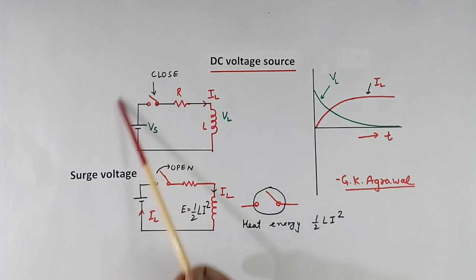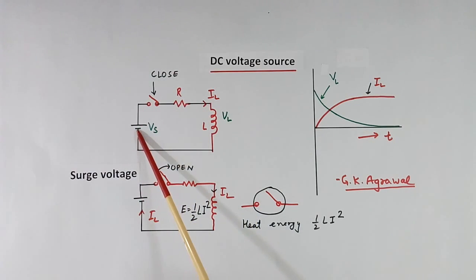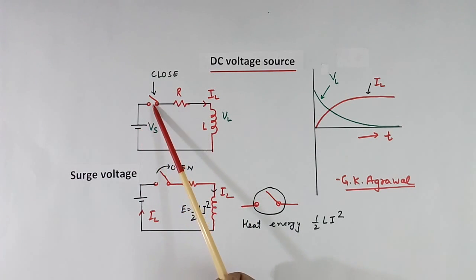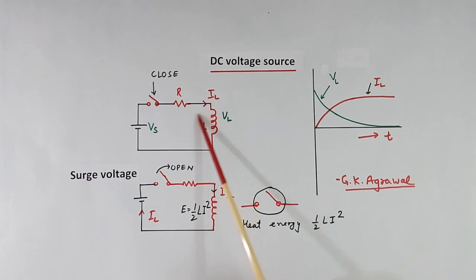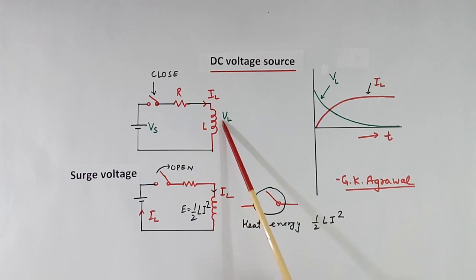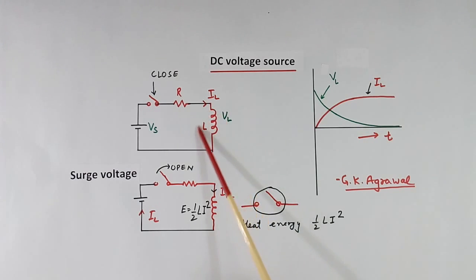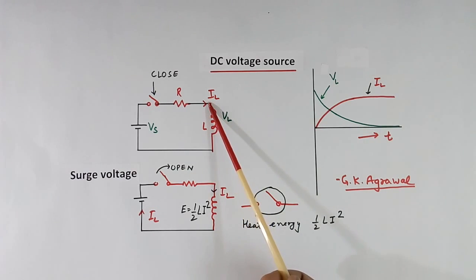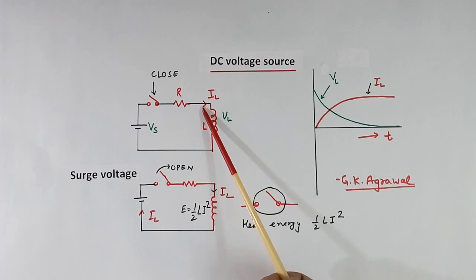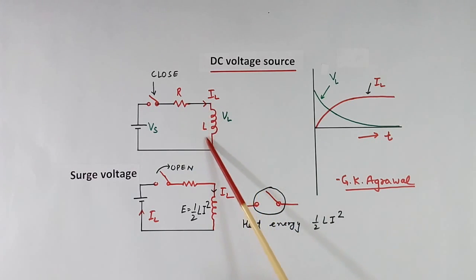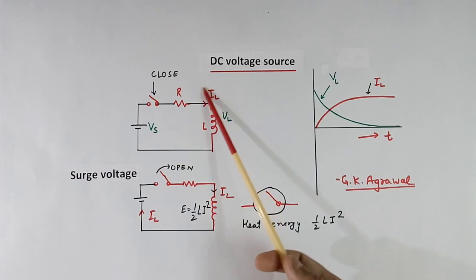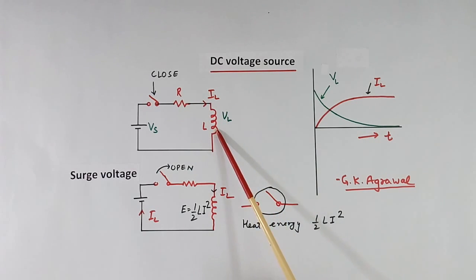Here I have shown one simple circuit — a battery, switch, resistor, and inductor. Inductor behavior is such that it always opposes the change in current. If current is increasing, it will try to reduce the speed of increment. Similarly, if current is reducing, it will try to reduce the speed of decrement.